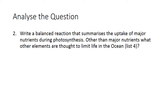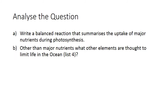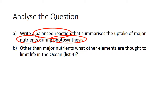Moving on to the second question, which was about how nutrients are taken up during photosynthesis. Once again, split this into two parts. The first part is basically asking you to write a balanced reaction that summarises the uptake of nutrients involving nitrate and phosphate during photosynthesis. The second part is asking you to list, other than the major nutrients, what other elements are thought to limit life in the ocean — and it's asking you for a list of four.